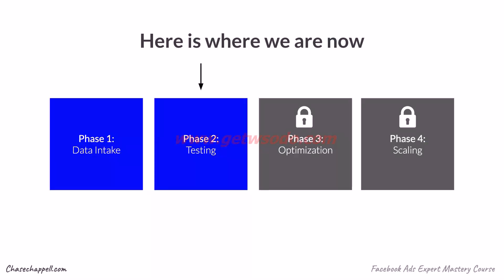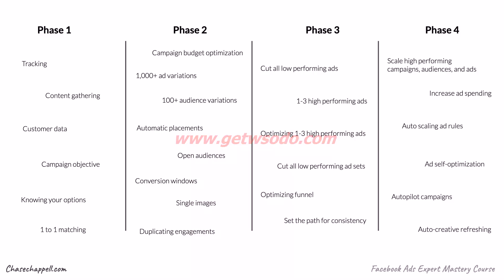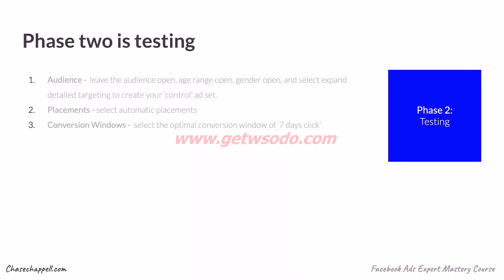This is where we are right now — we are testing. You should have already completed phase 1 by setting up your tracking, turning on one-to-one matching on your pixel, and choosing the campaign objective you're going to optimize for, which is either leads or purchases. Now we are in phase 2. We will be covering the ad set optimality structure today, which includes the audience variations we're going to create, automatic placements, our open audience which is the control audience, and the conversion windows. It's imperative that we stay in order and don't skip or make irrational decisions by moving ahead. This four-phase system has worked for all of our clients and every student who has precisely followed these steps.